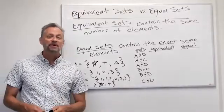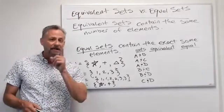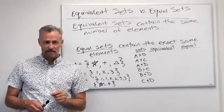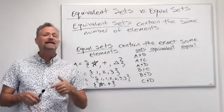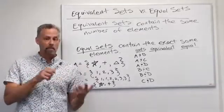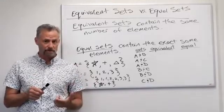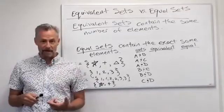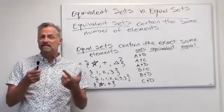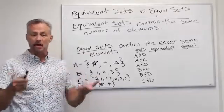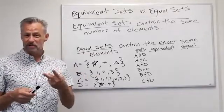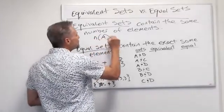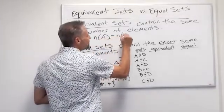Hi everyone, this is Professor Monte. Let's talk about equivalent sets versus equal sets. Equivalent sets contain the same number of elements. Equal sets contain the exact same elements. Since equivalent sets contain the same number of elements, for two sets A and B, we can say N of A is equal to N of B.